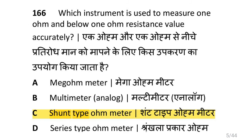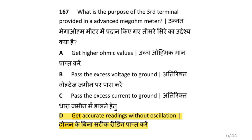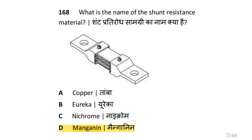Which instrument is used to measure one ohm and below one ohm resistance value accurately? That is shunt type ohmmeter. What is the purpose of the third terminal provided in an advanced mega ohmmeter? That is to get accurate reading without oscillation. What is the name of the shunt resistance material? That is magnet.